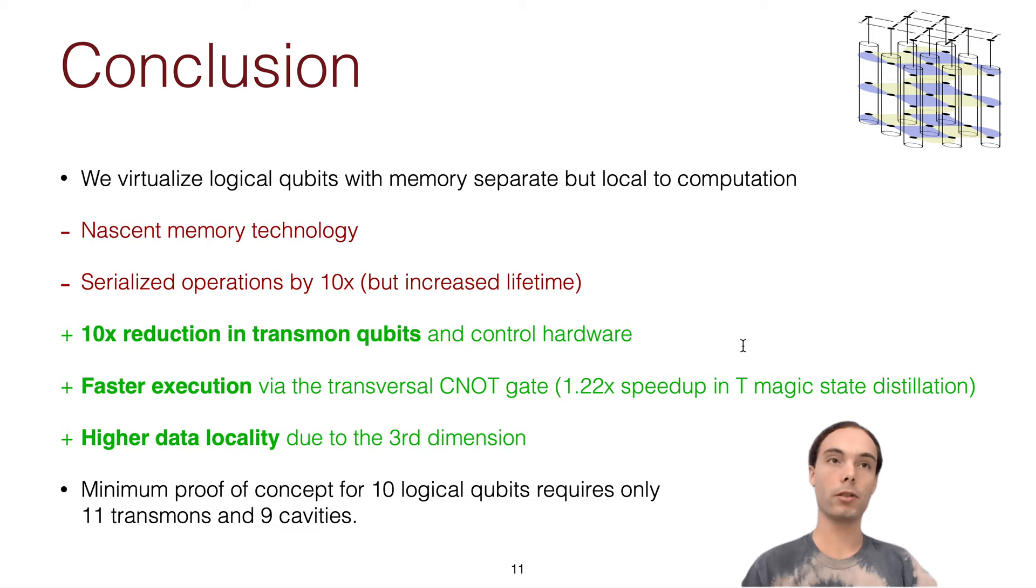But for quantum computers, the biggest metric is the ratio of how many operations you can do total before error overtakes your values. So the benefits we get though are we get this huge reduction in hardware complexity. We have 10 times fewer transmons and control hardware and control wires and all that. We're going to get faster execution via the transversal CNOT I showed. And it turns out that this gives us a 1.22 times speedup in magic state distillation. For error corrected algorithms, this is the major cost of any algorithm execution is generating t-states. So this is a big win. Final thing is that just higher data locality means that there's less communication congestion and this third dimension and the transversal CNOT gives us the ability to do more operations with less communication.